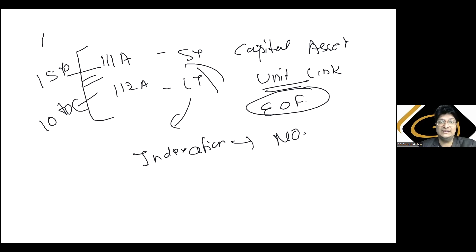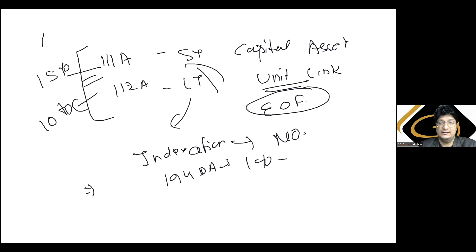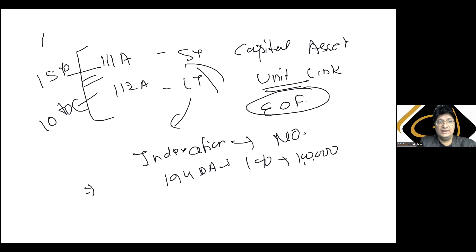Ab baat aati hai TDS ki — Section 194DA ke under, jo bhi amount insurance company aapko pay karegi, agar woh 1 lakh se zyada jaata hai to 1% TDS katega. Is tarike se TDS ki limit define hai. Friends, I hope aapne samjha ki kis tarike se yeh taxability kaam karti hai — in sab cheezoon ka tax impact samajhna zaroori hai, nahin to diqqat ho jaayegi.